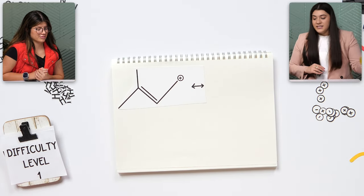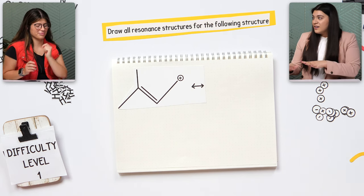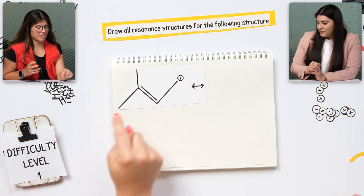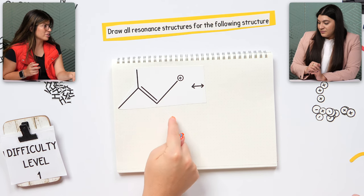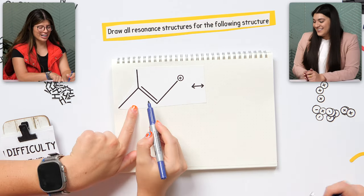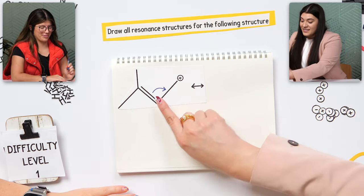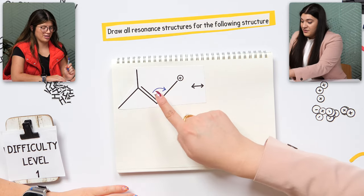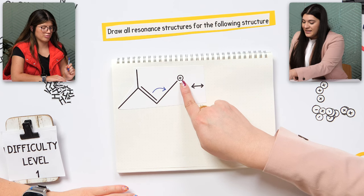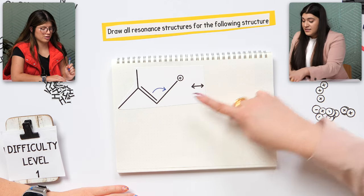We just saw that. Now I want us to actually draw the resonance structures. How would electrons move here? We kind of already saw this from the last example. The tail of the arrow points to what's being moved, and the head of the arrow shows where the bond is going to be formed. So I would say it moves from here to here. You're right. A lot of times students want to point this to the positive charge, but we want to show that there will now be a double bond at this end.